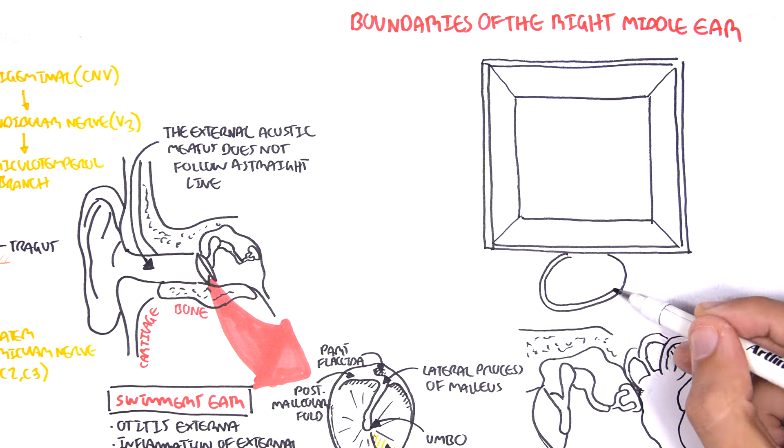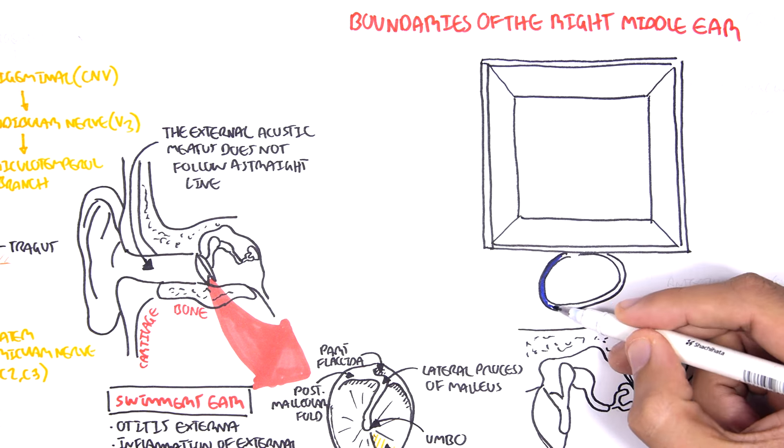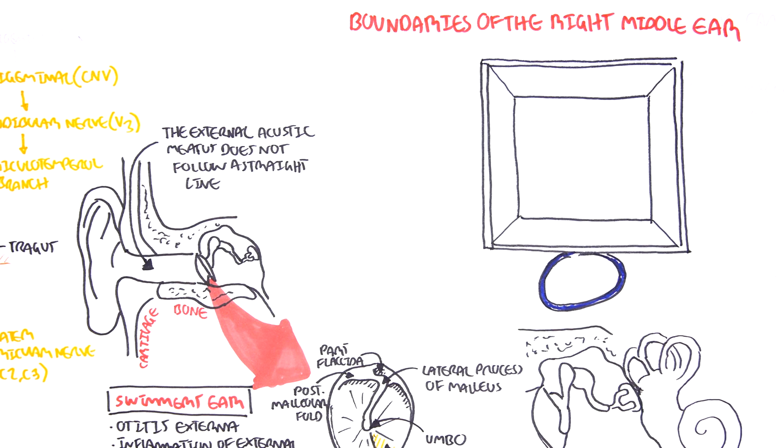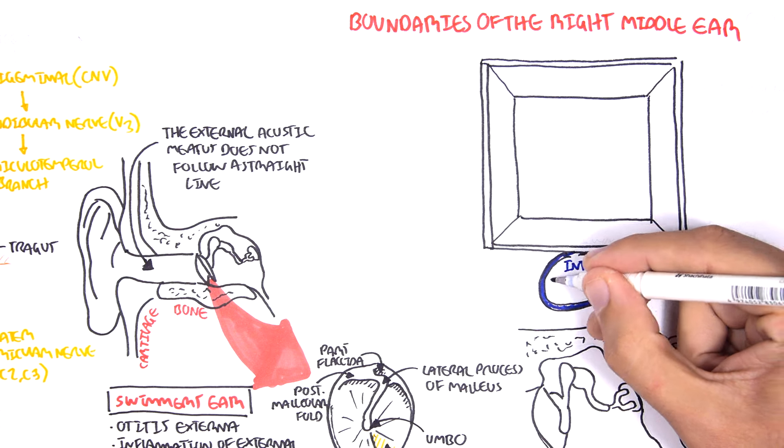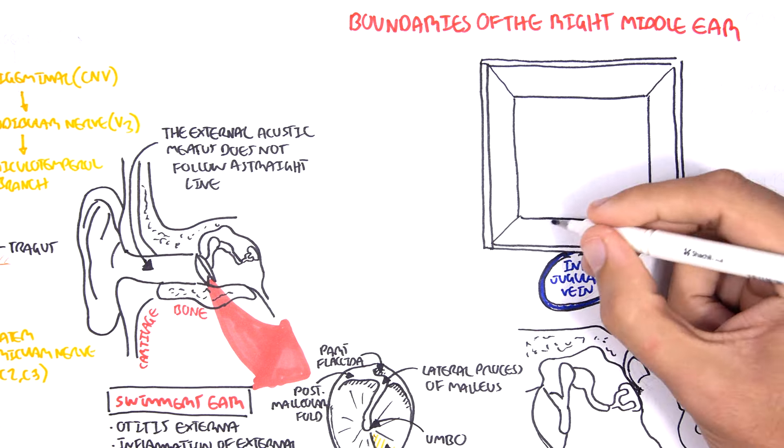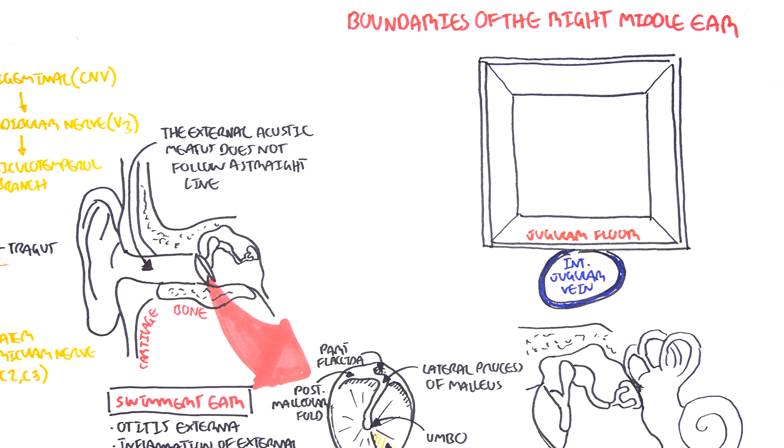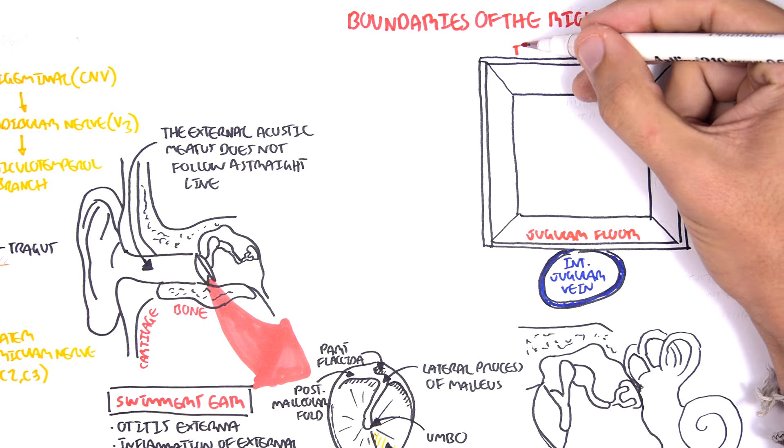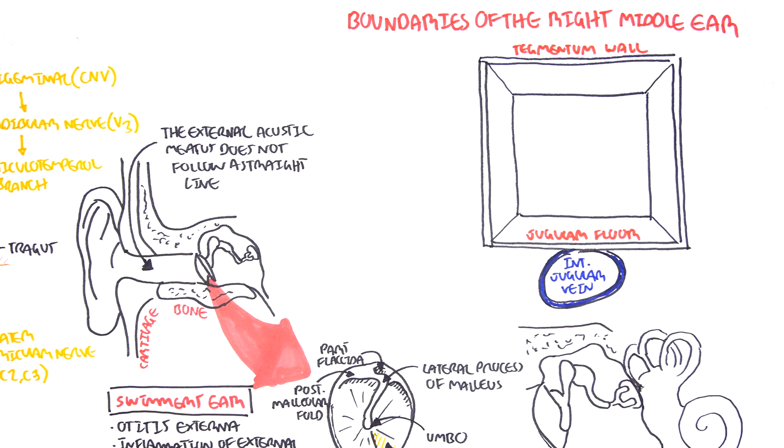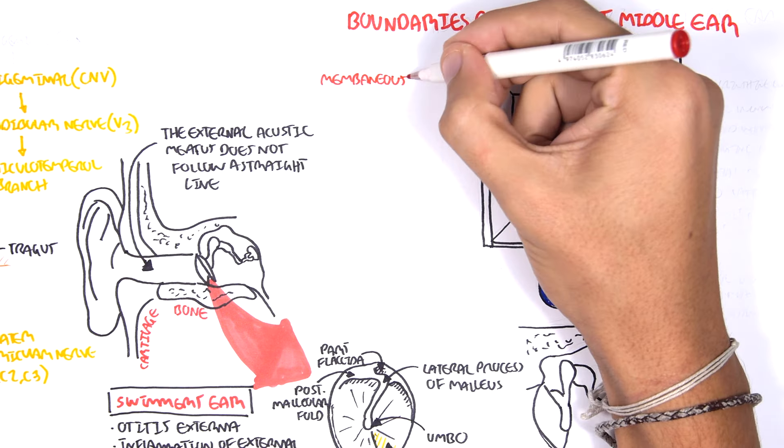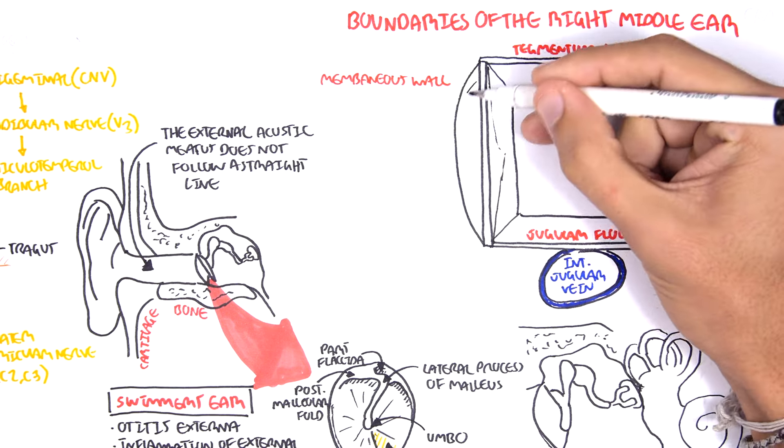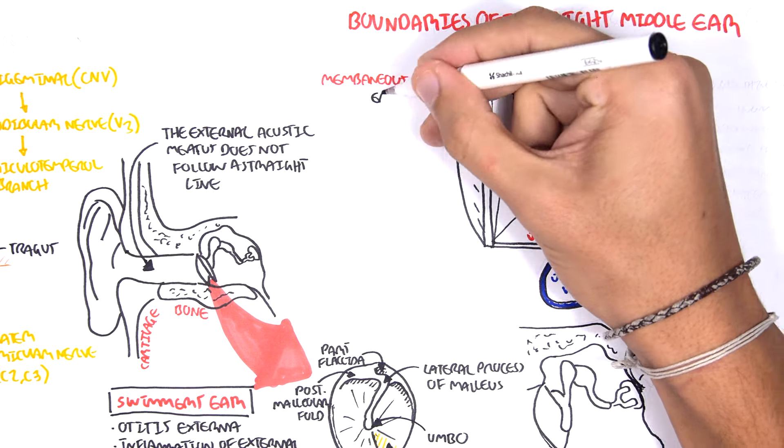The inferior wall of the middle ear is also known as a jugular wall or jugular floor, because this is where you can find the internal jugular vein run its course. We have the tegmental wall on the top, which is your frontal bone. The lateral wall, the one most towards the outside, is the membranous wall, because this is basically your eardrum.